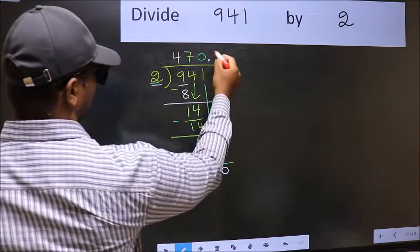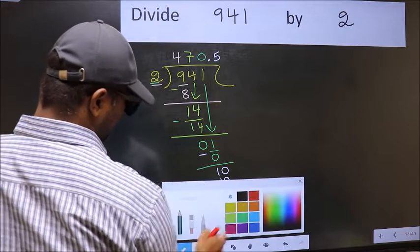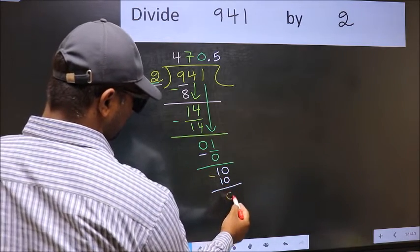When do we get 10 in 2 table? 2 fives, 10. Now you should subtract. 10 minus 10, 0.